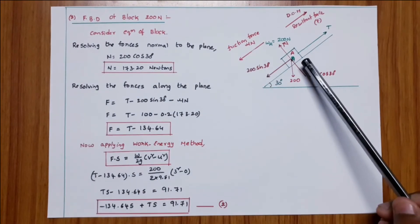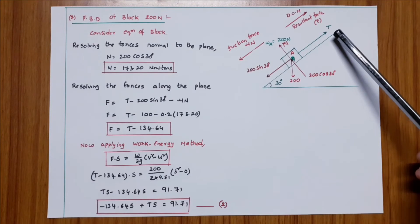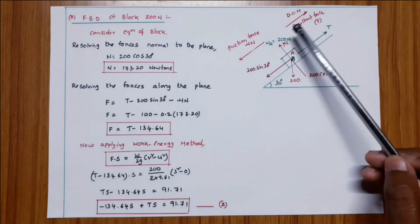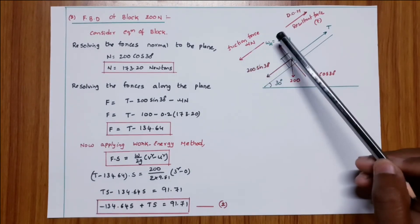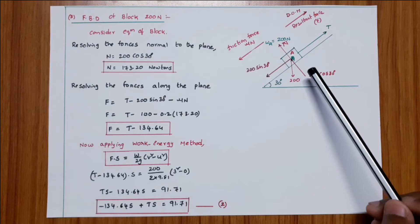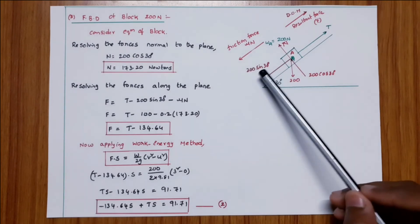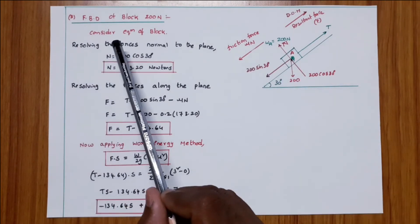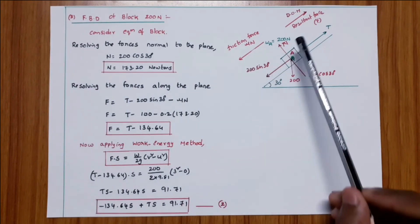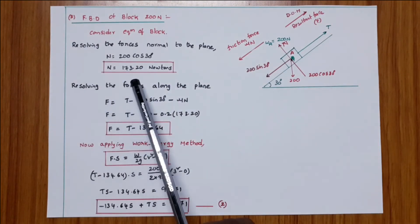FBD of block A, 200 Newtons, on the 30-degree incline. The direction of motion is upwards along the plane. Tension T acts upward (away from the block). Friction force mu×N acts opposite to the direction of motion, so mu×N acts downward. Weight 200 N acts downward. The component normal to the plane is 200 cos 30, and along the plane is 200 sin 30, acting downward. Resolving forces normal to the plane: N equals 200 cos 30, so N equals 173.20 N.